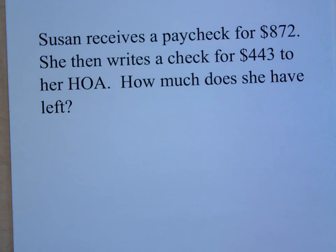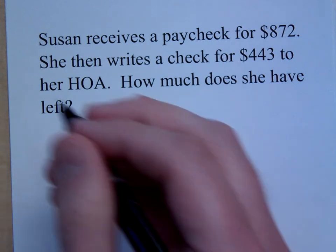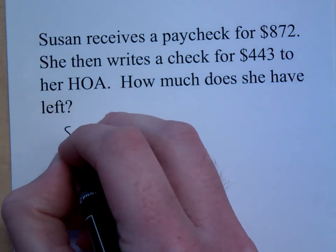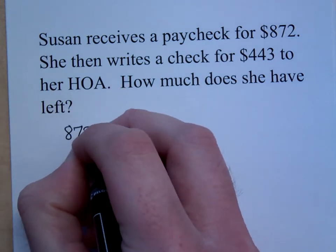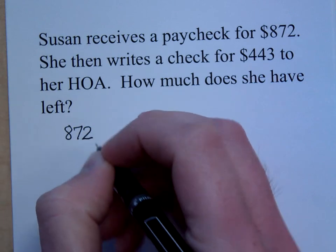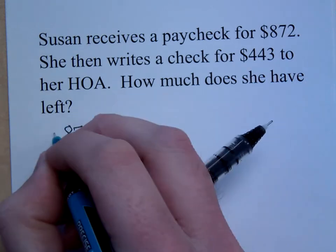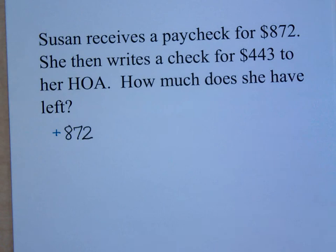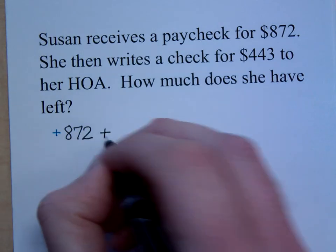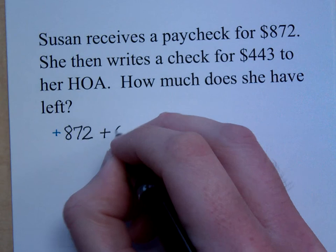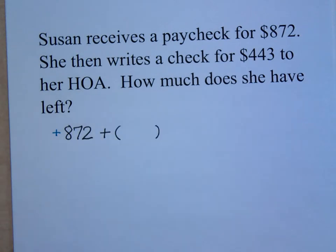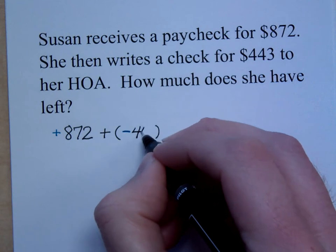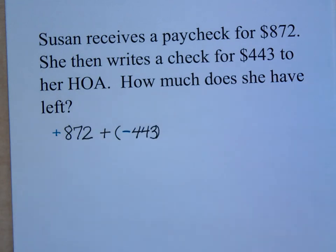So when I look at these numbers, I'm trying to combine these two numbers, right? When I see the $872, is this a positive or a negative? We see a paycheck as a positive number, right? And I'm adding to that what kind of number? Negative. If you write a check, we know that this really means a negative 443. Are you guys with me on that? Yes.